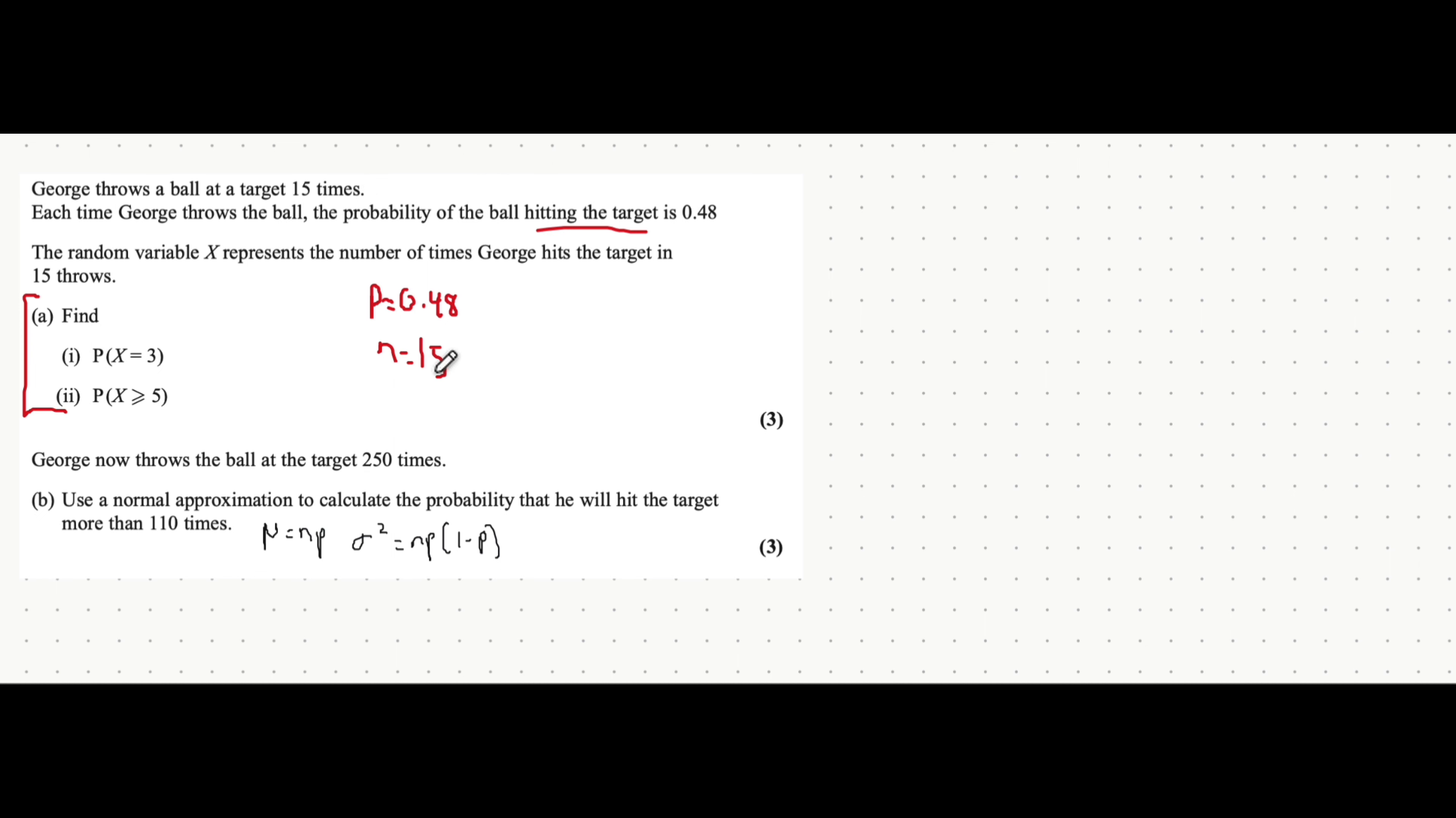Now, on my calculator, probability of X equaling anything will always get me the binomial PD function. However, probability of X being less than or equal to something will always get me the CD function. So finding the first part of the question is pretty easy. If I go to my calculator, I go to binomial PD. So I click menu, I then click on distribution, and then I can see binomial PD.